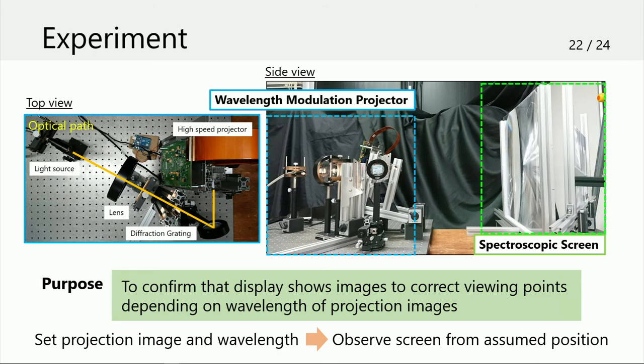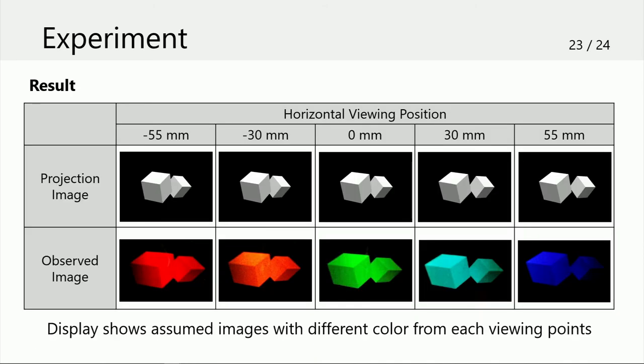Here I show experimental results of observed images from each viewing point. We took photographs of assumed images with different colors from each viewing point. Therefore, we verified a part of the principle that the proposed display can show 3D images. However, the displayed images are dark to see with human eyes.